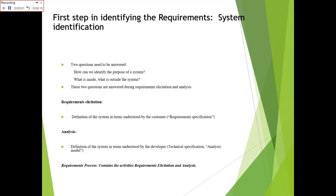The next step is to identify the requirements. Whenever a customer creates software, the first question is what are the requirements for that particular system. Two questions arise: how we can identify the purpose of the system, and what is inside and outside that particular system — meaning what is the objective, the aim, and what techniques are used in the front end and back end. Requirements allocation gives the definition of a particular system in terms understood by the customer.